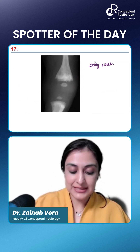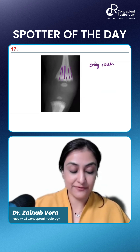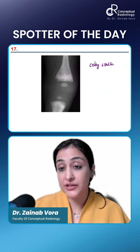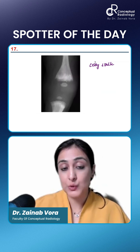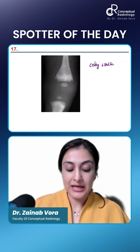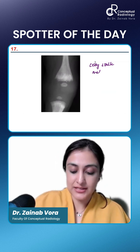You can see that there are these radiating lines on the metaphyses. For a minute, you will think that there is metaphyseal irregularity. But when you look closely, you can see that there are these linear striations going into the metaphyses. So this is what is a celery stalk metaphyses.